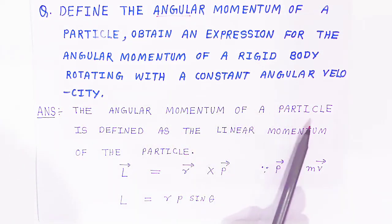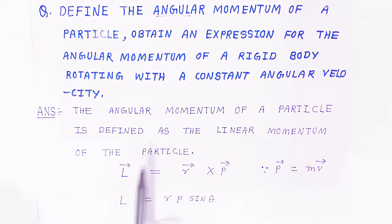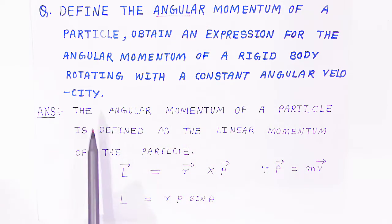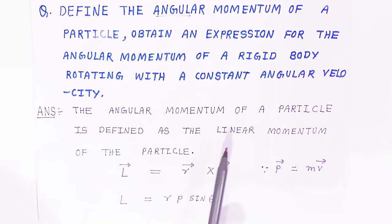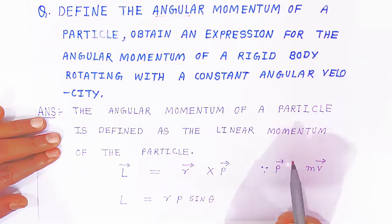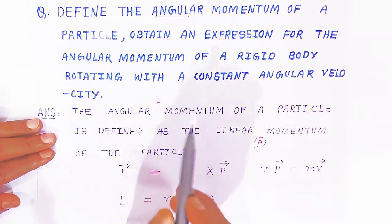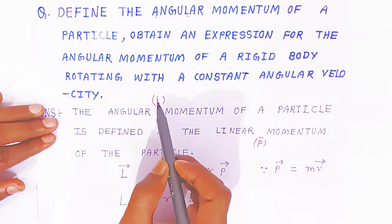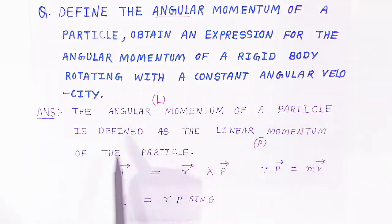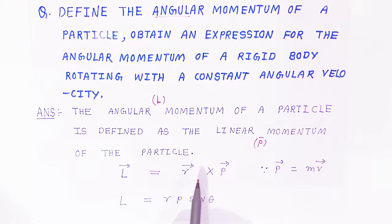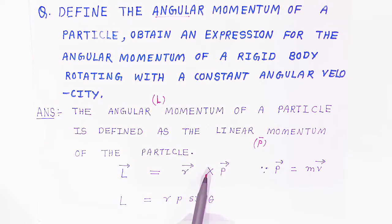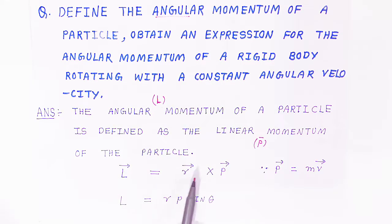Angular momentum of a particle is defined as the linear momentum of the particle with respect to its radius. Angular momentum is always related with linear momentum. Linear momentum is shown with P, and L stands for angular momentum. So L equals R-bar cross P-bar. Because their directions are very important, we use the cross product between R-bar and P-bar.